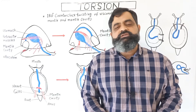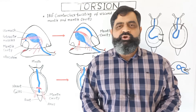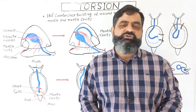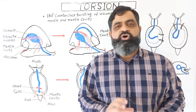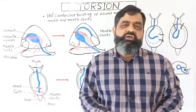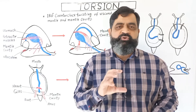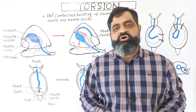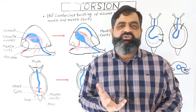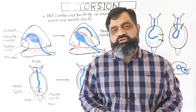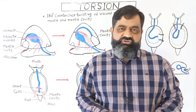Hello to all students, this is Professor Masood Fuzal. In this video lecture we are going to discuss torsion in mollusca. Molluscans belong to phylum Mollusca, which are usually gastropods, and they do a process known as torsion in their early stages of life during the larval stage. They produce a veliger larva, and during the development of the larva it undergoes a process known as torsion.